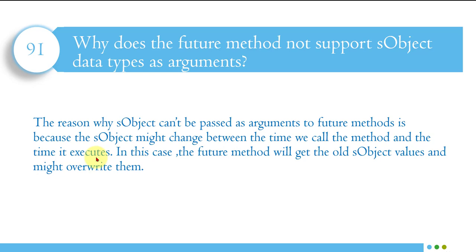Why does the future method not support SObject as an argument? The reason is that SObject records might change between the time you call the method and the time it actually executes. For example, if I call a future method at 5:00 PM but it doesn't start running until 5:10 PM because resources were busy, any changes made to those records between 5:00 and 5:10 would cause the data to be stale. That is why Salesforce does not allow SObject records as parameters in a future method.